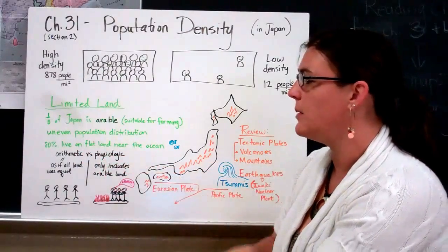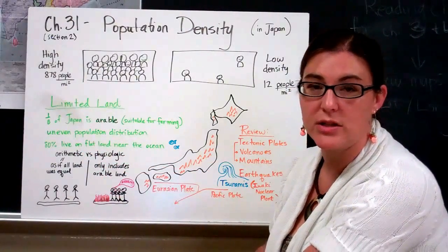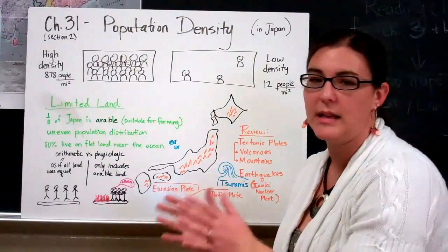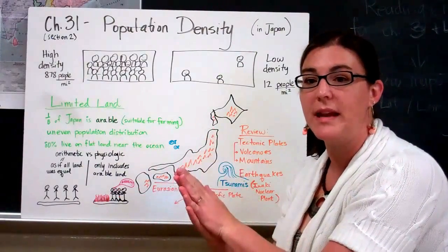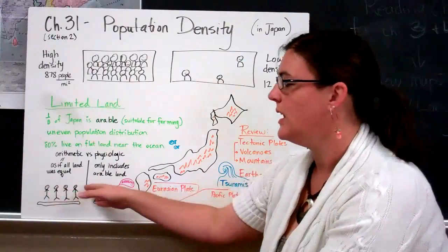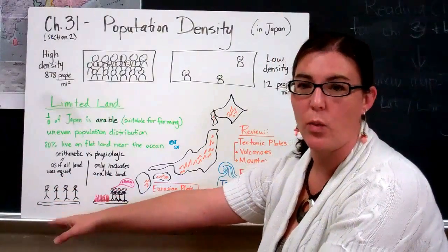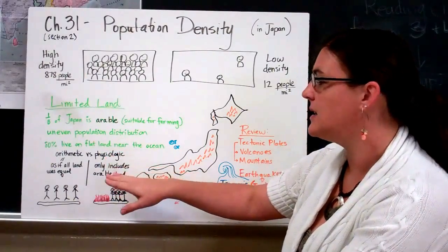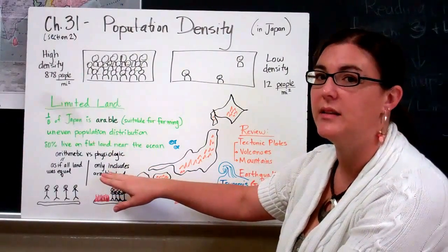They threw two vocabulary words at you - arithmetic population density and physiological population density. Basically, one is numbers and one is space. So if you think about arithmetic as if all land was equal and I could live and spread out wherever I wanted...